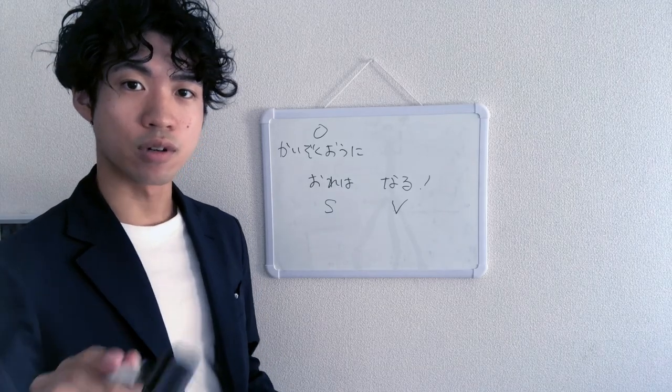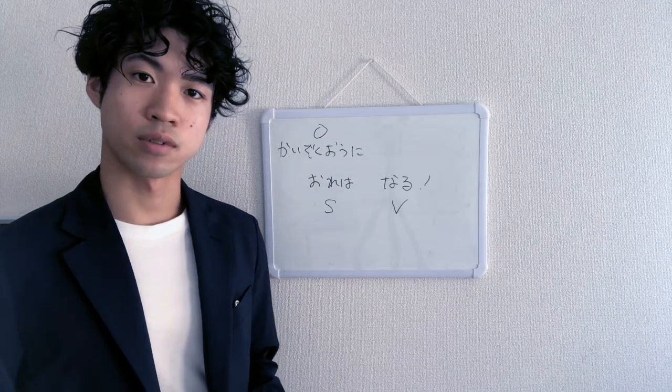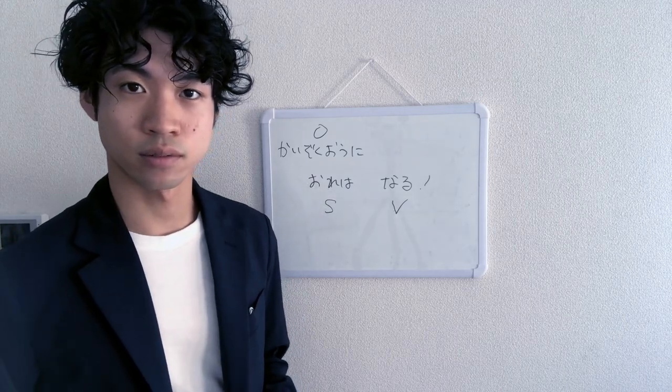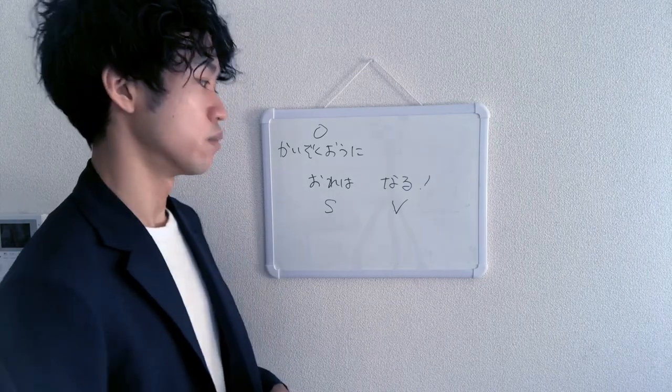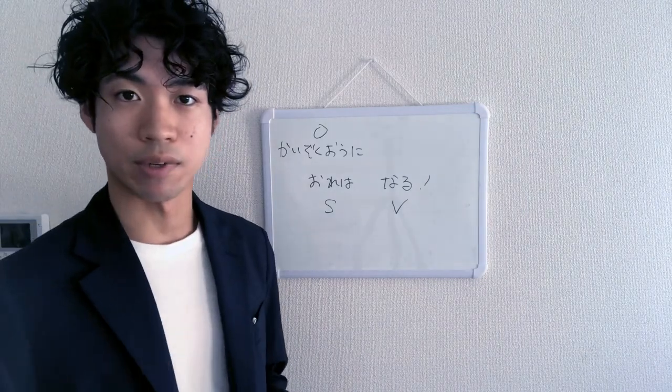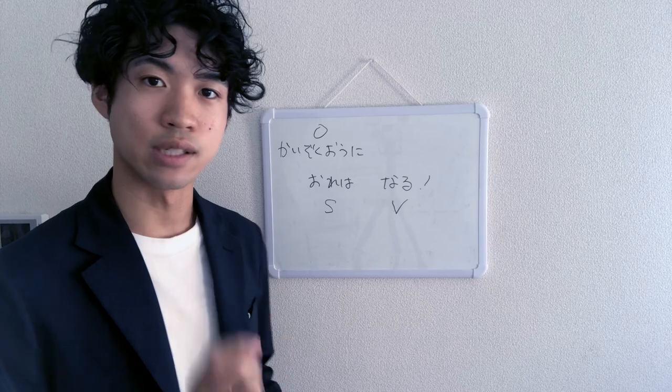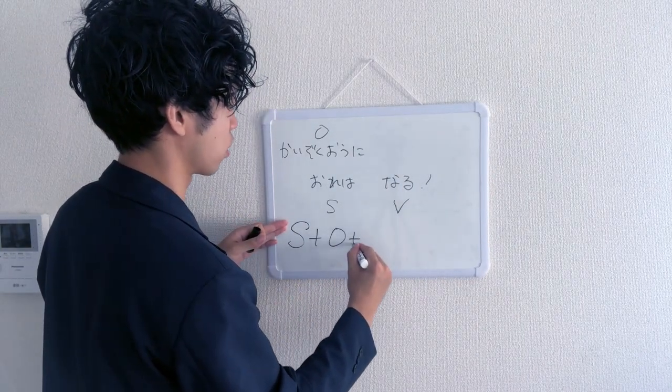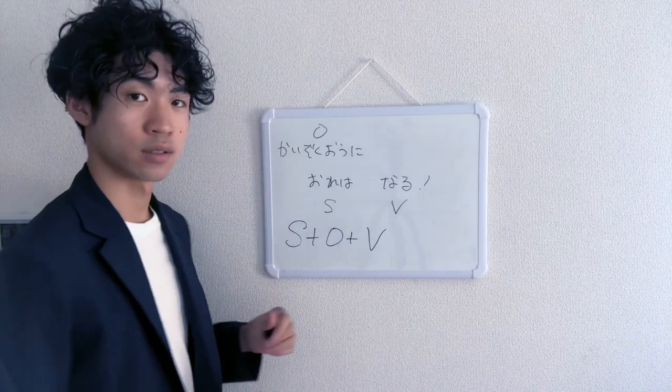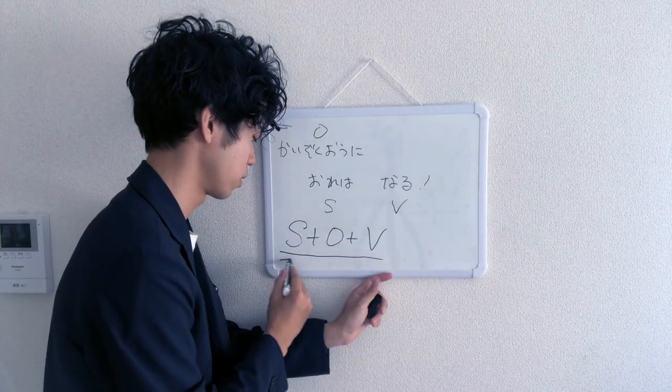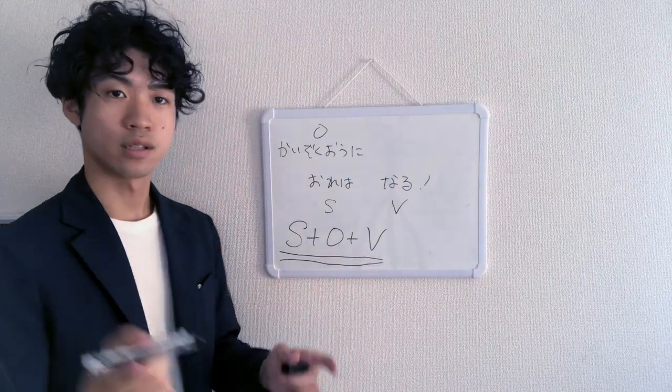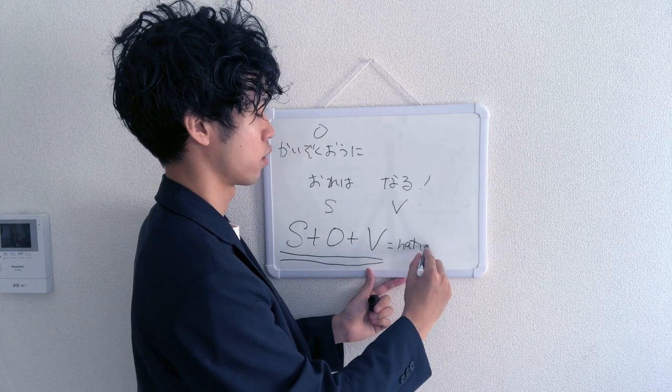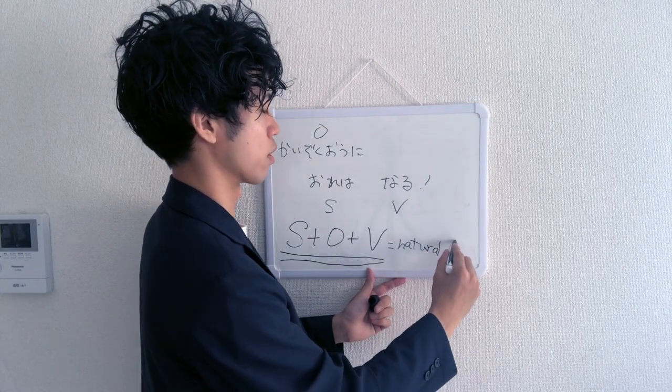And if you know about Japanese grammar, you know this is not a natural order. Typically, I want you to remember this. Typically, Japanese grammatical structure is like this: SOV. Please remember this one, this is really important. This is a basically natural Japanese grammatical structure.